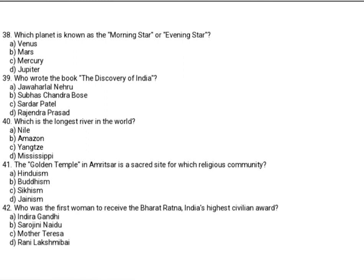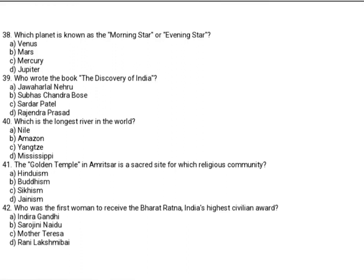Which planet is known as the morning star or evening star? Option A: Venus. Option B: Mars. Option C: Mercury. Option D: Jupiter. The correct answer is Option A, Venus.